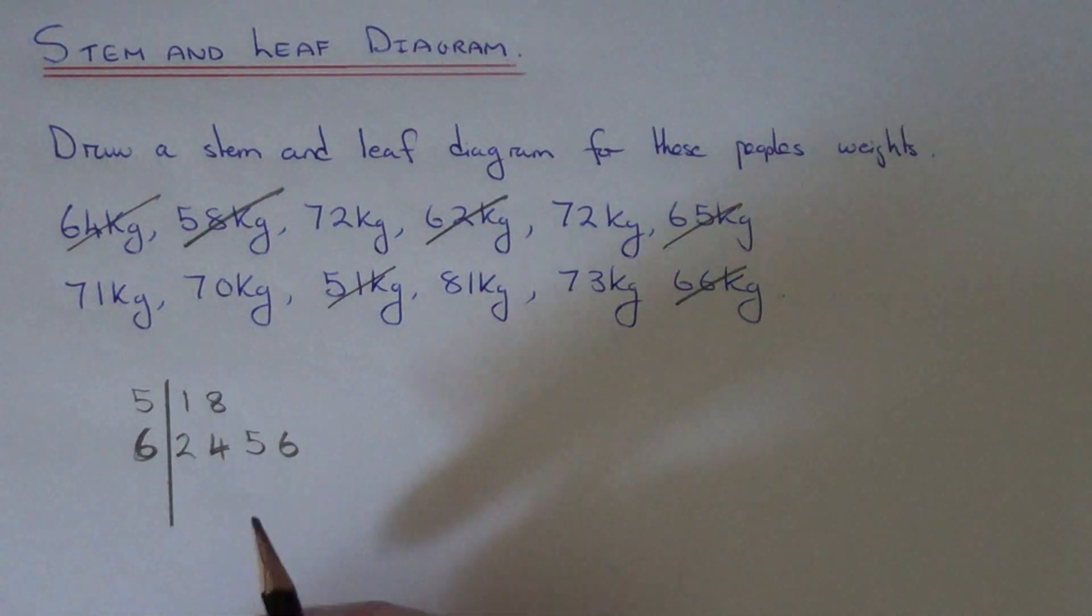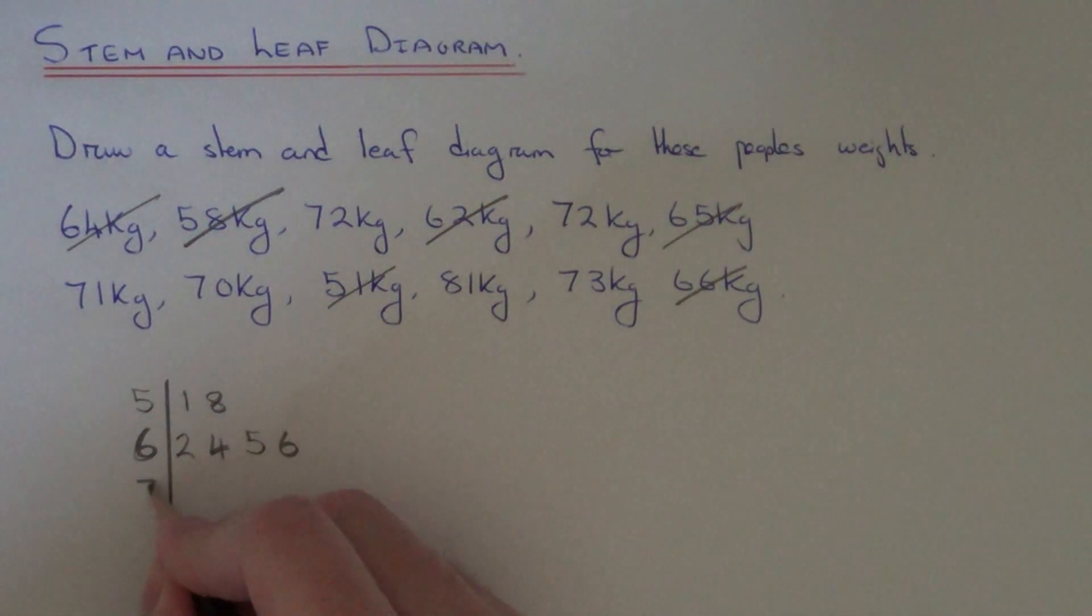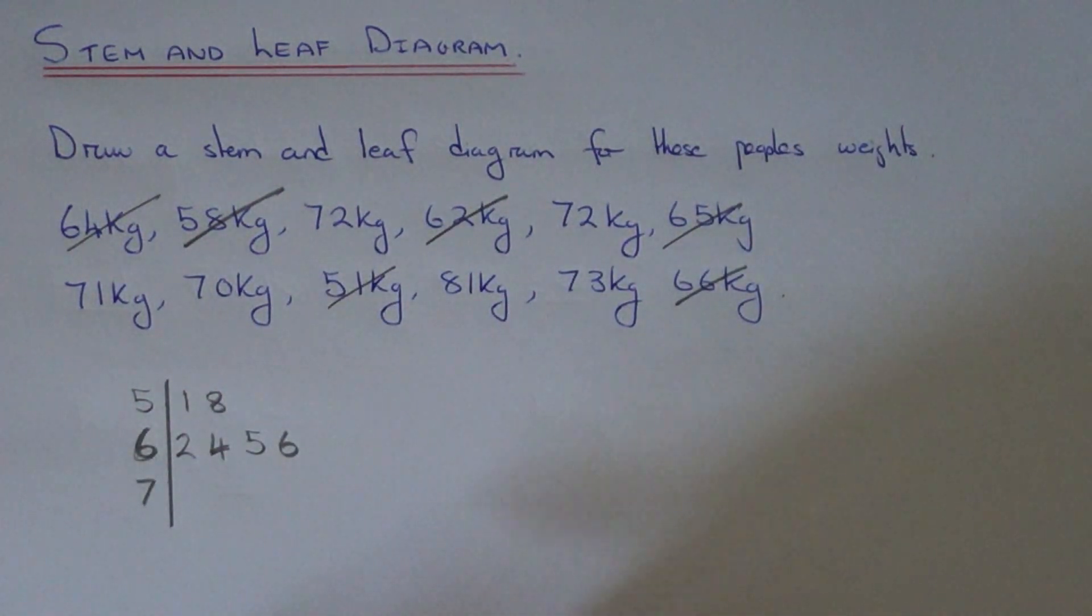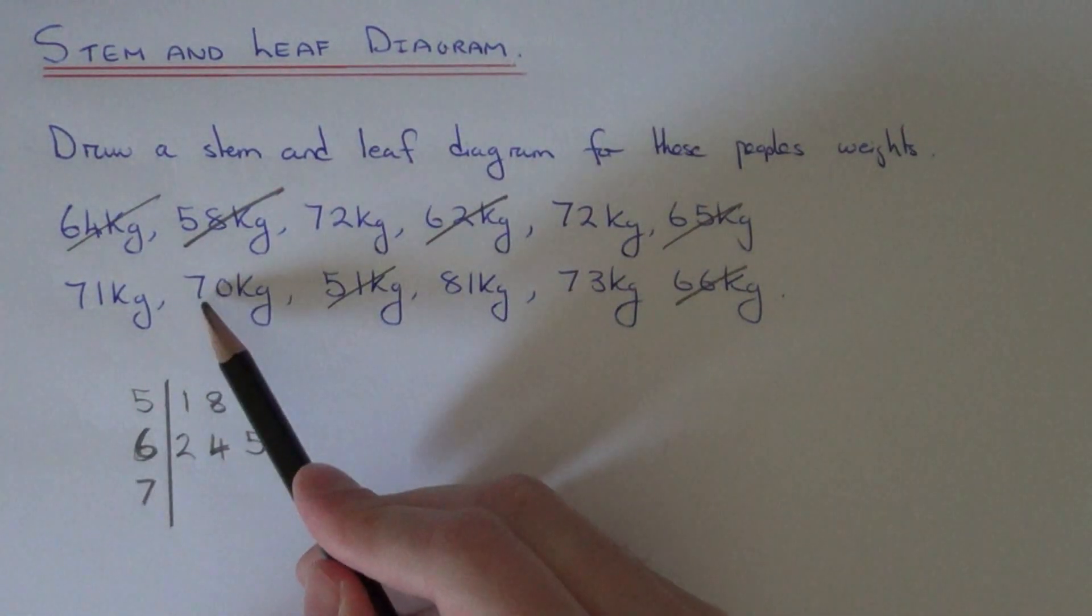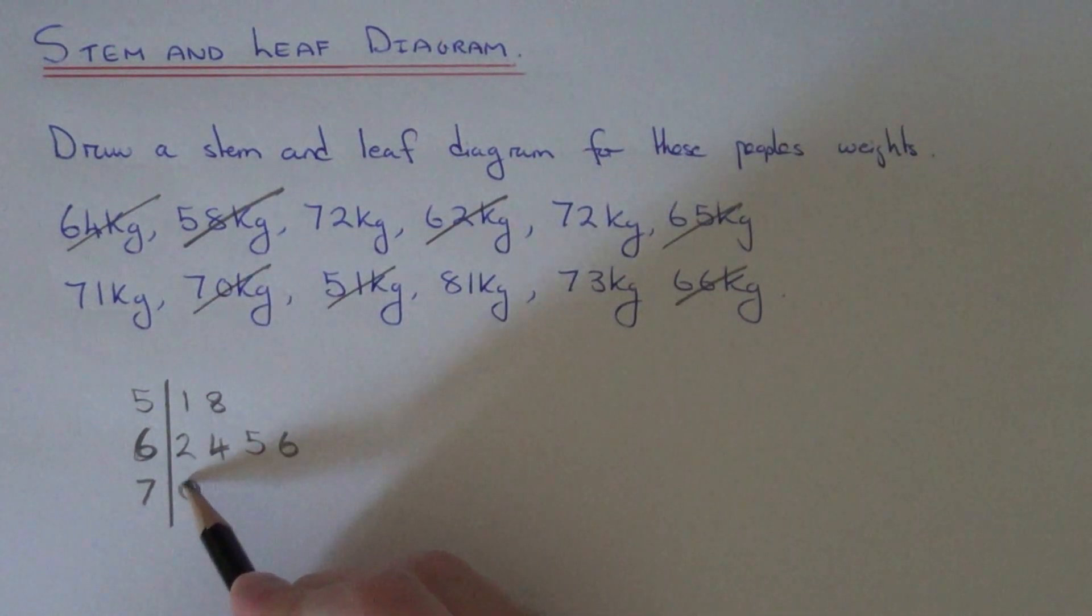We're into our 70s now. So we've put a 7 on the left hand side of the line. Our next biggest one is 70, so we just drop the 0 there.